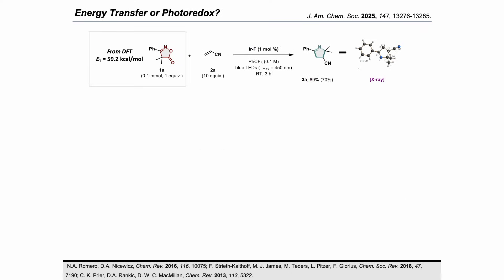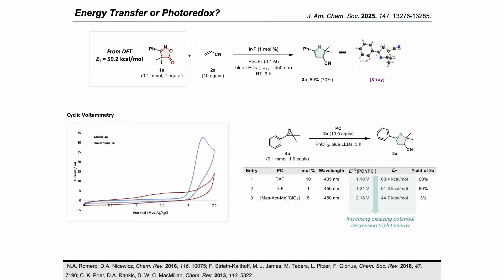The next mechanistic question was the nature of the excitation — are both steps energy transfer as suggested by DFT, or could some photoredox mechanism be operative in one of the two steps? From CV studies, we saw that isoxazole 1a had no redox activity, therefore rendering energy transfer for the first step more likely. For the second step, the azirine showed one single irreversible oxidation event at 2.24 V. When screening more oxidizing photocatalysts with lower triplet energy — such as acridinium — only negligible amounts of product were recovered, suggesting that the second step is also energy transfer.